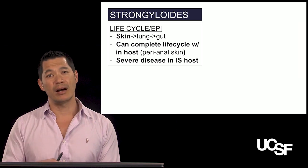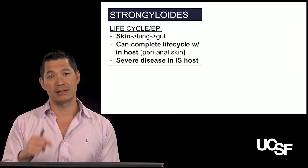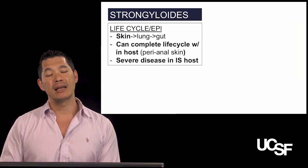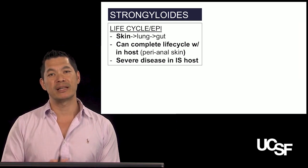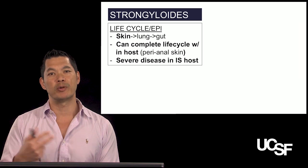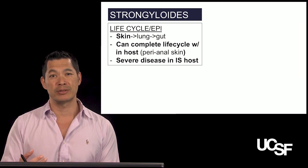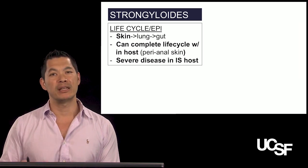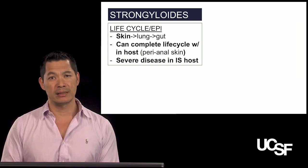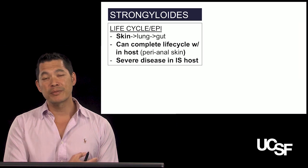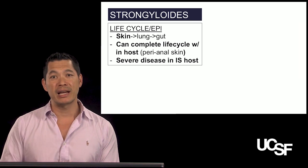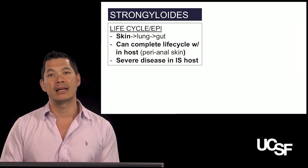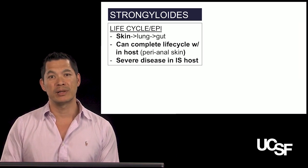This auto-infection can occur very frequently, and hyper-infection — meaning a lot more parasites — can also occur, affecting many organs including the lungs, the GI tract, the skin, the brain, and other organs. People who become immunocompromised after prior exposure, such as Vietnam vets who were in Southeast Asia decades ago, or patients now on transplant immunosuppression or high-dose steroids for COPD, can have strongyloides come back with a high rate of replication.